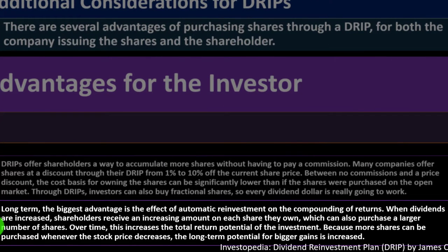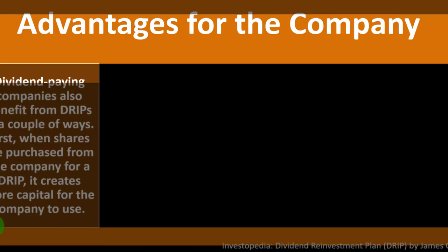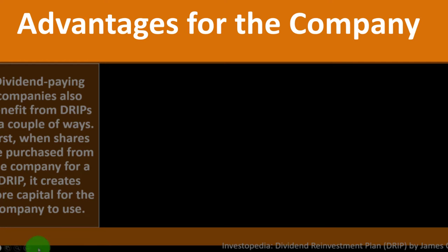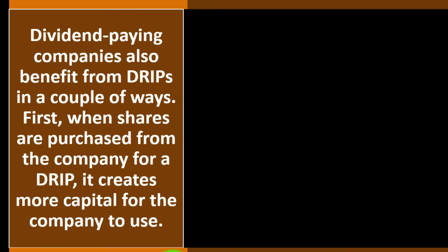Long-term, the biggest advantage is the effect of automatic reinvestment on the compounding of returns. When dividends are increased, shareholders receive an increasing amount on each share they own, which can also purchase a larger number of shares — a compounding effect from reinvesting. Over time, this increases the total return potential of the investment, and because more shares can be purchased when the stock price decreases, the long-term potential for bigger gains is increased.